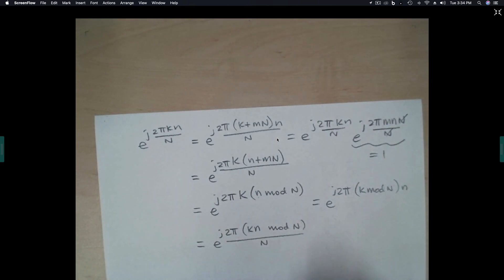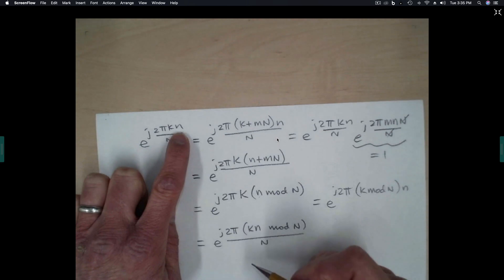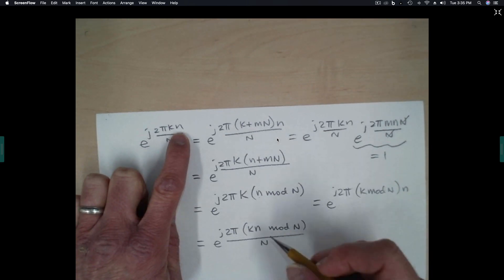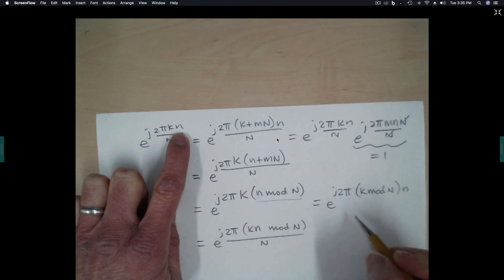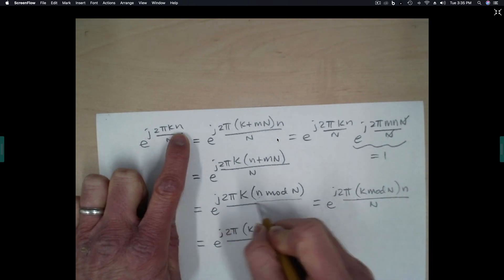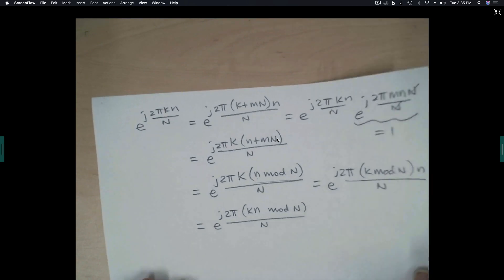But the important part for us is to note that whenever we are looking at the derivation of transform pairs for the DFT, and we see something other than k and n in these positions, we need to remember that when we write down an expression, we have to write it down in terms of n mod n or perhaps k mod n. Let's take a look at an example where this actually happens.